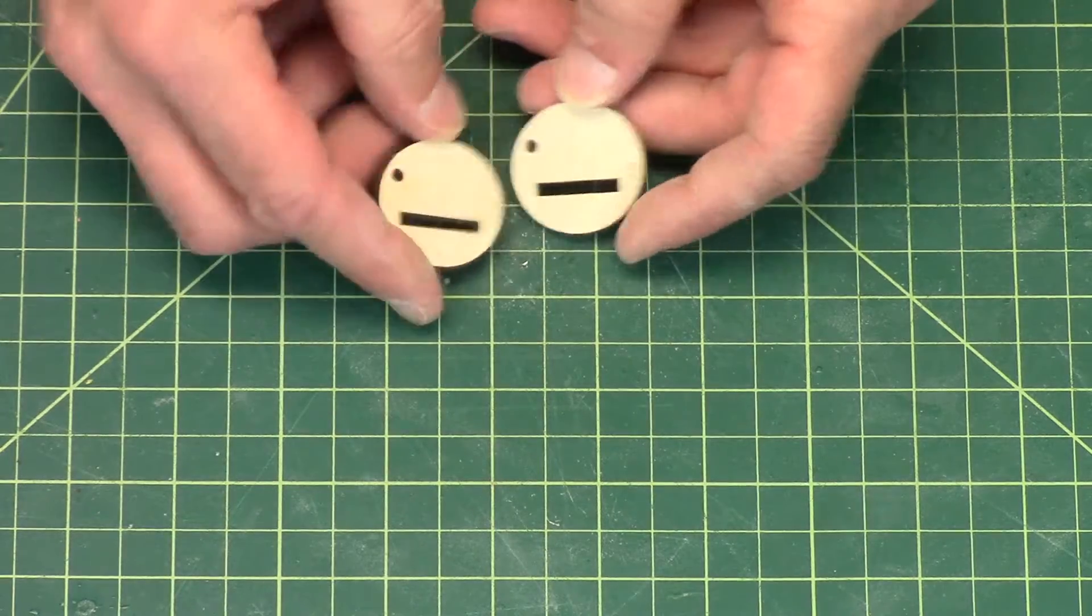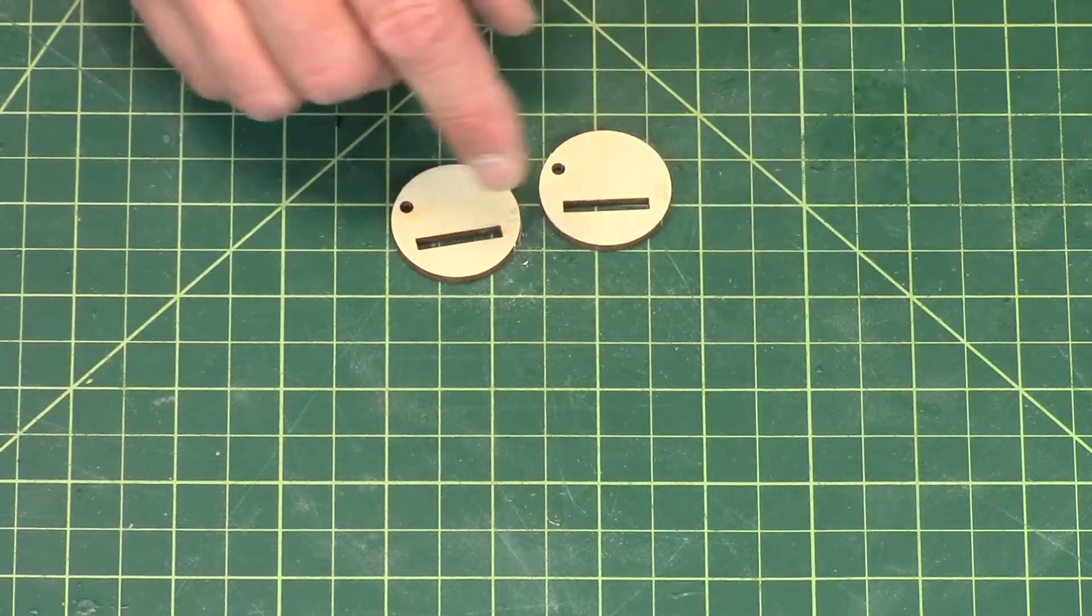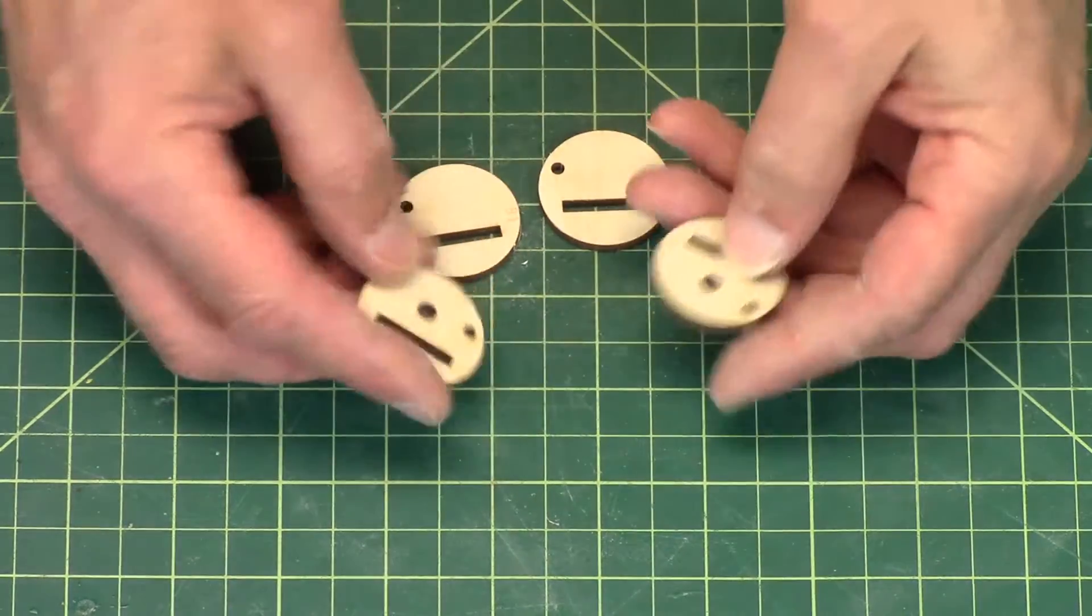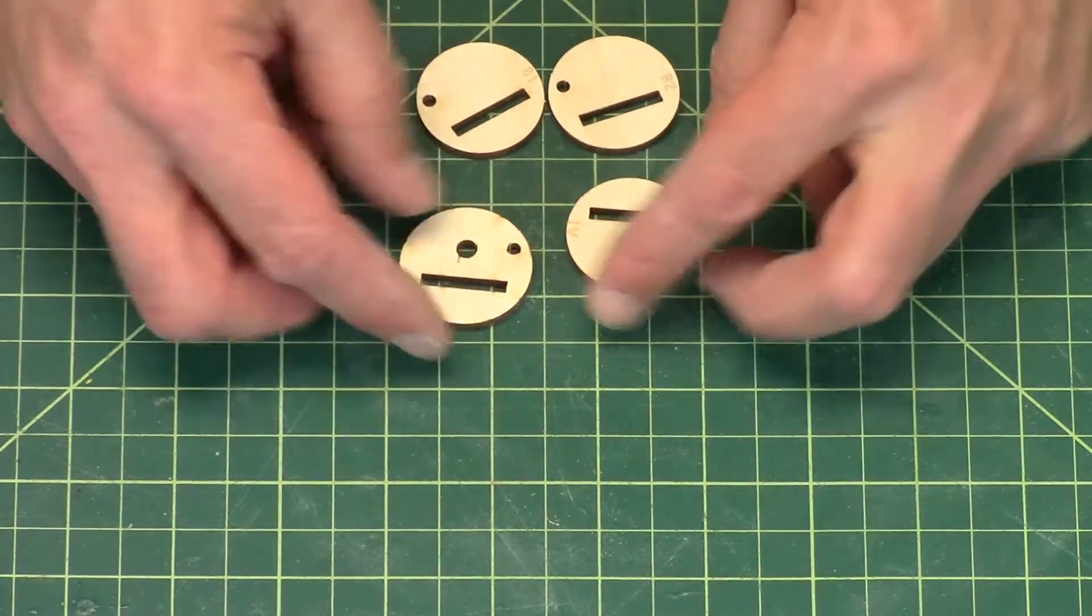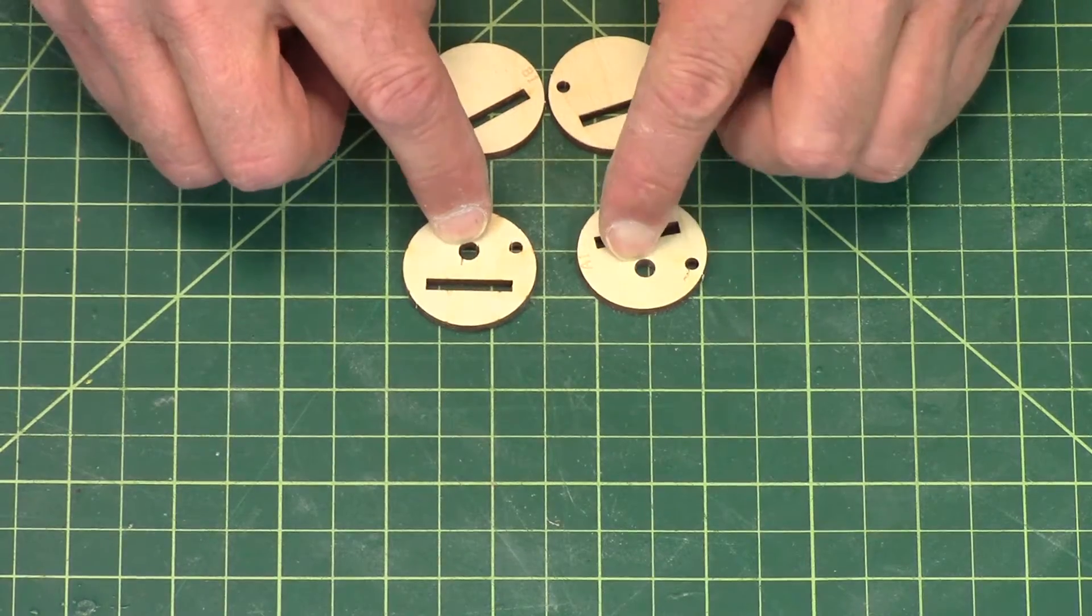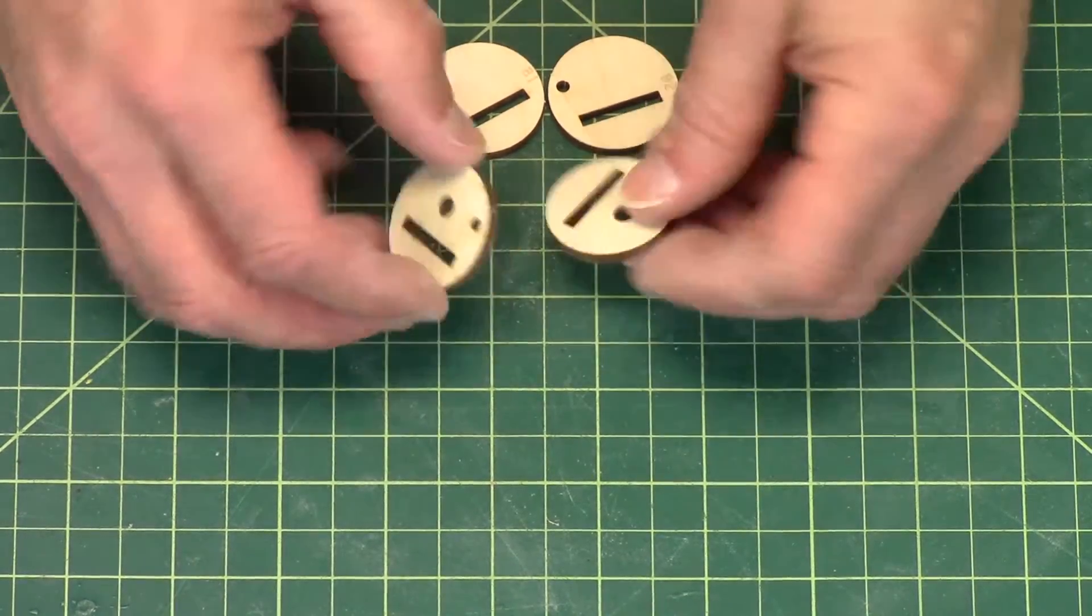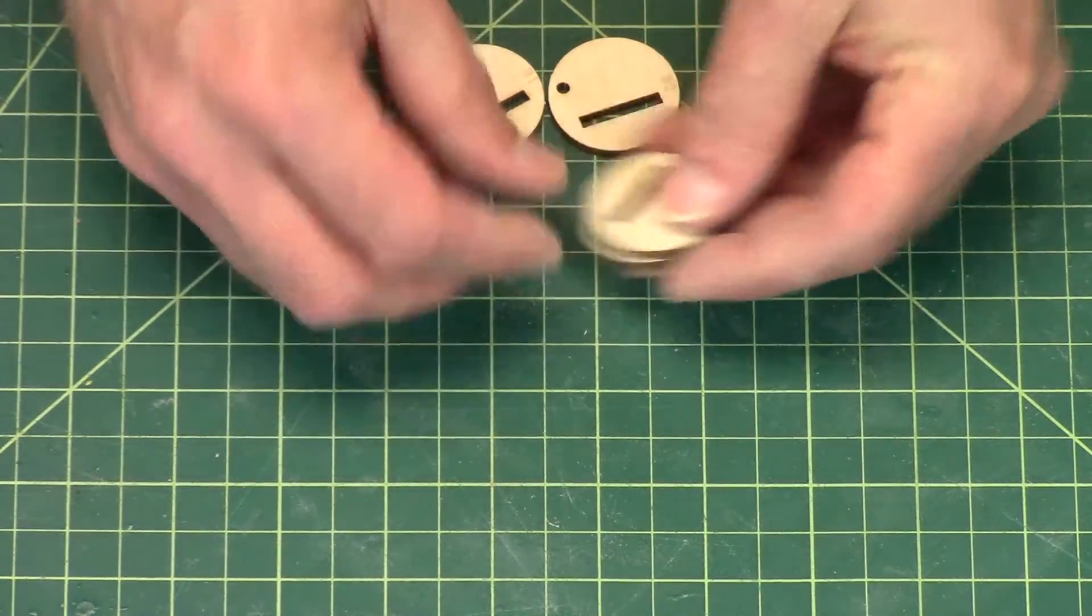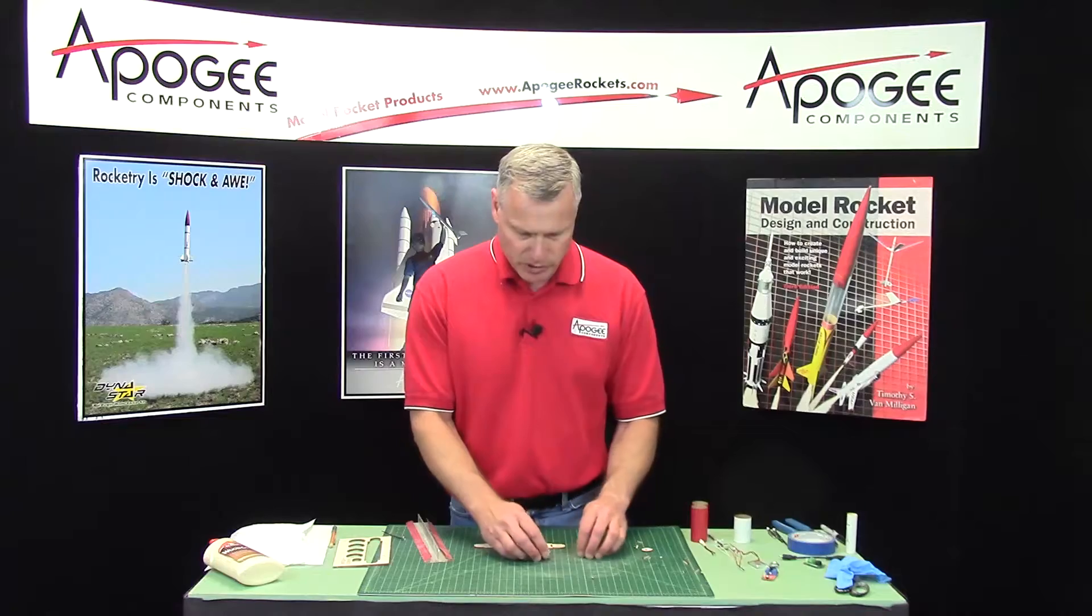You'll notice B1 and B2 have a slot but no center hole, where A1 and A2 have the center holes along with the slots. So those two will go together, and these two will go together. Pretty simple so far.